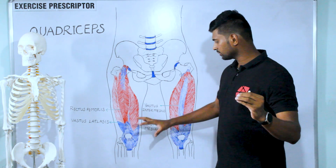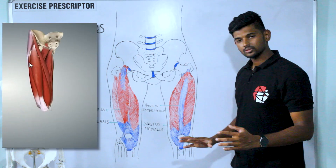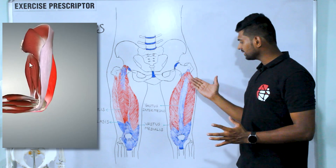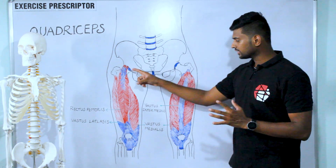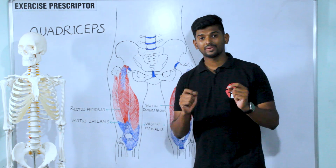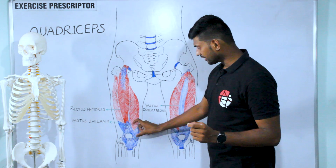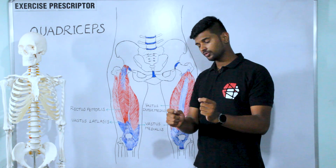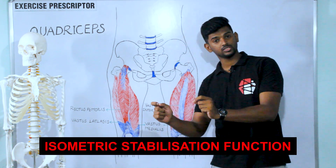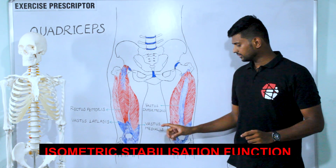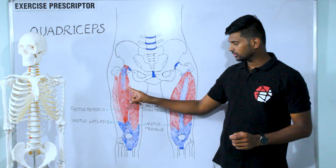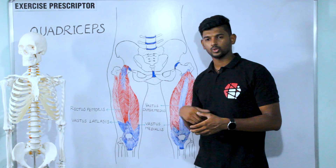To summarize the quadriceps function: all quadriceps muscles together help to extend the knee joint and extend the thigh at the knee joint. Rectus femoris also helps in hip flexion and anterior pelvic tilt. Due to the difference in lever range, rectus femoris is more powerful at the knee joint than at the hip joint. The isometric stabilization function of the quadriceps helps to stabilize the tibiofemoral and patellofemoral joints, and rectus femoris also helps to stabilize the hip joint.